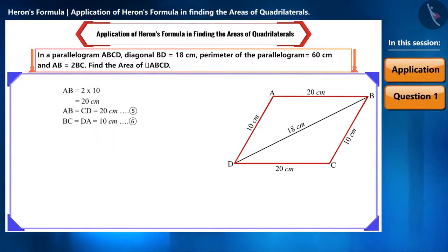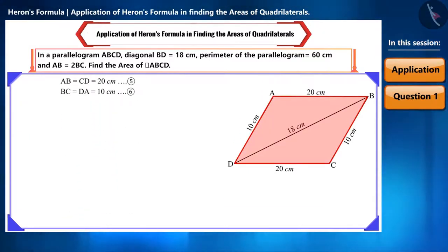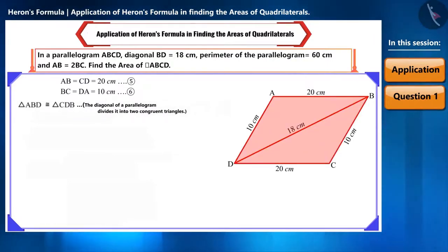Now, we will find the area of this parallelogram. Since we are not given any information about its height, we cannot use the formula base multiplied by height. But we know that the diagonal of a parallelogram divides it into two congruent triangles. This means their areas will be equal.